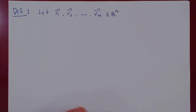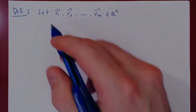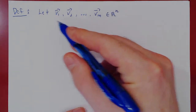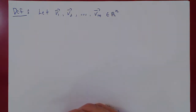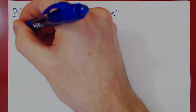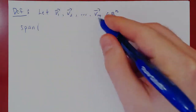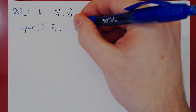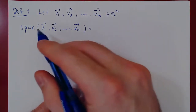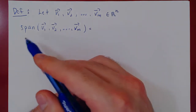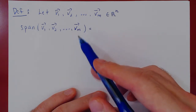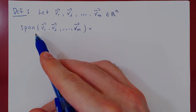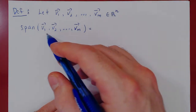Suppose we take m vectors in Rn, where Rn is the set of column matrices of length n. Here's how we define and denote the span of these m vectors. We write span of v1, v2, up to vm. The span of vectors is a synonym of generate — what can we generate with these m vectors? We generate other vectors through linear combinations. So the span is the set of all linear combinations of these m vectors.